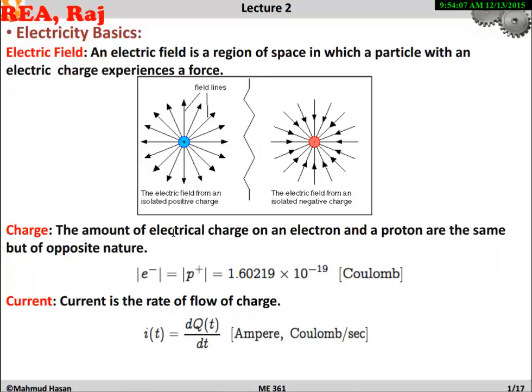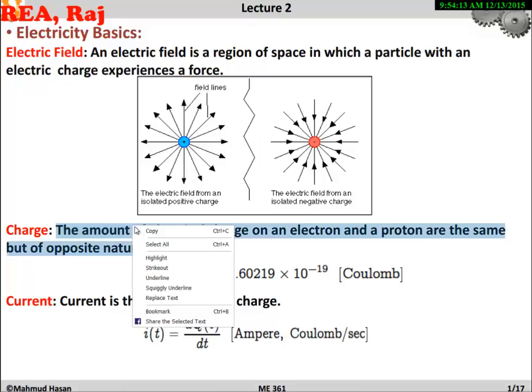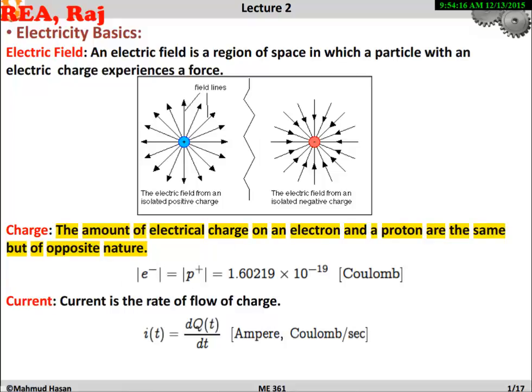The amount of electric charge on an electron and a proton are the same but in opposite nature. So the amount of electric charge is the amount of electric charge.